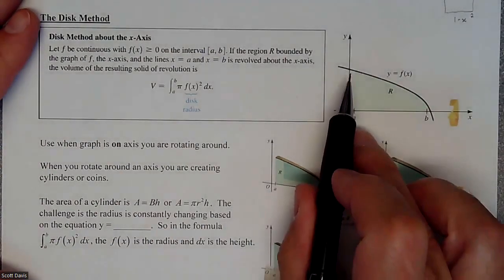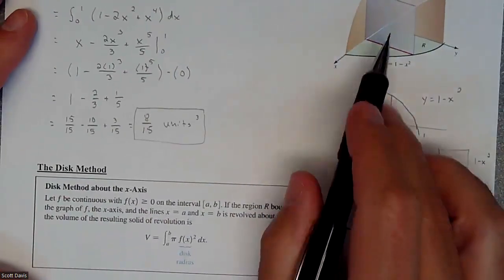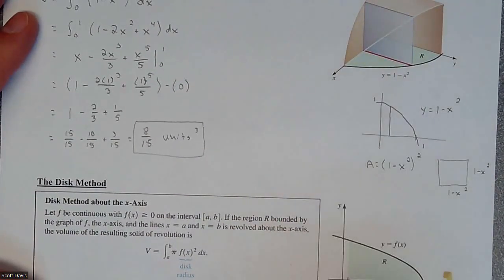The next type of problem we're going to see is we're going to have some sort of curve. This last one was a curve creating these squares and we found this volume.